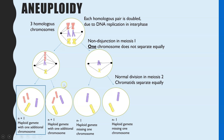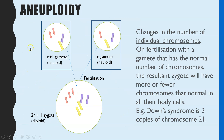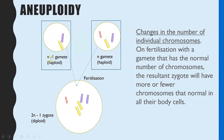If an N plus 1 gamete fertilizes a normal gamete, we end up with a diploid cell plus one extra chromosome. The zygote has an additional chromosome, and this is one form of Down syndrome — three copies of chromosome 21. If it is the N minus 1 gamete, we again get a diploid zygote but it is 2N minus 1: diploid, two copies of each chromosome, but missing the second copy of that red chromosome.